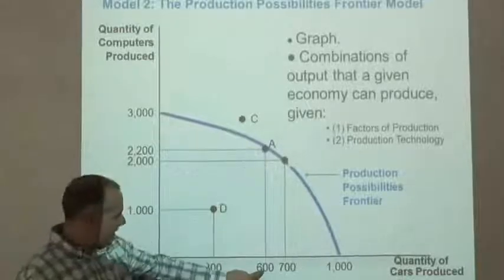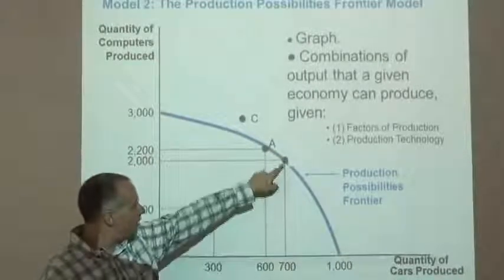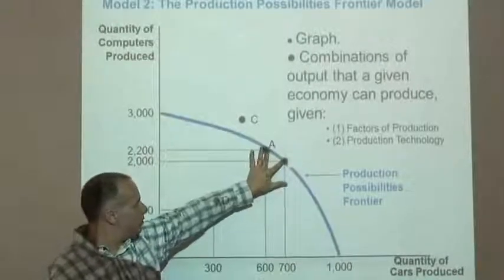We could also do A, 600 cars, 2,200 computers produced, right? If we wanted to move between these two points,